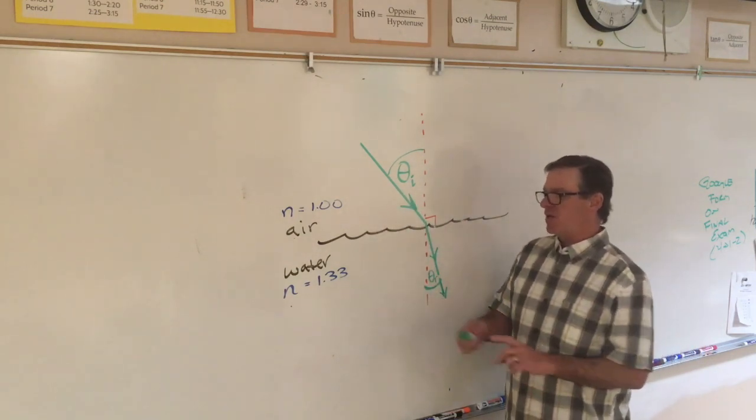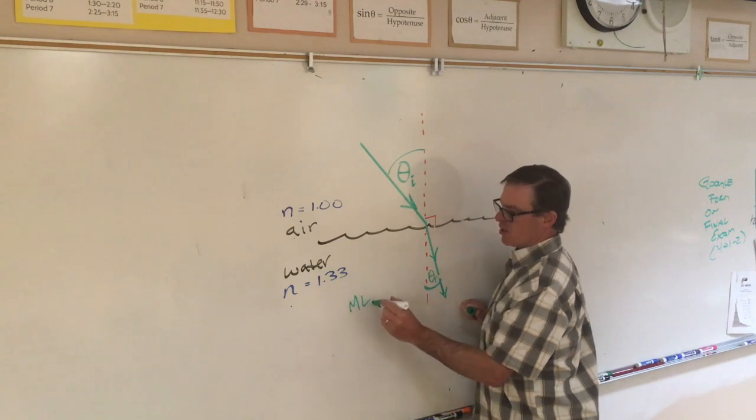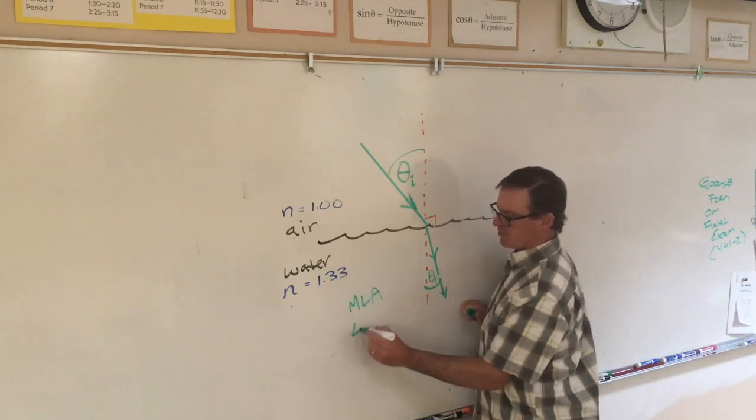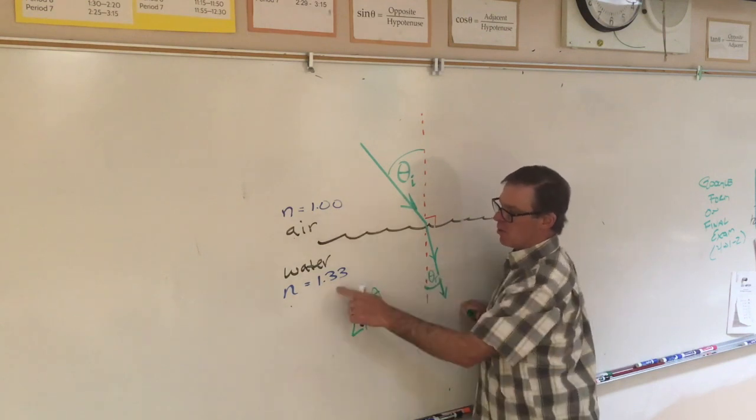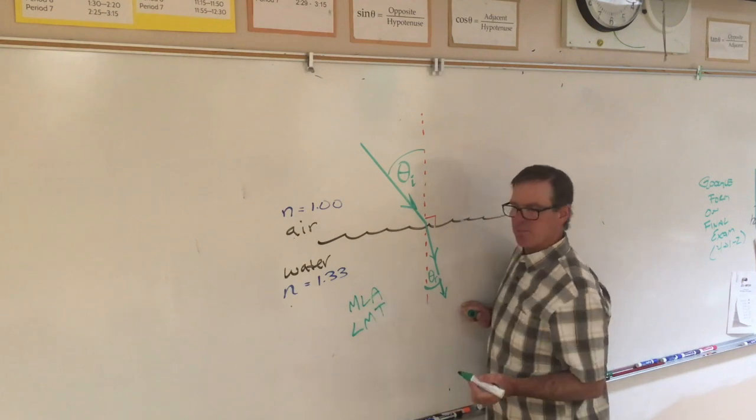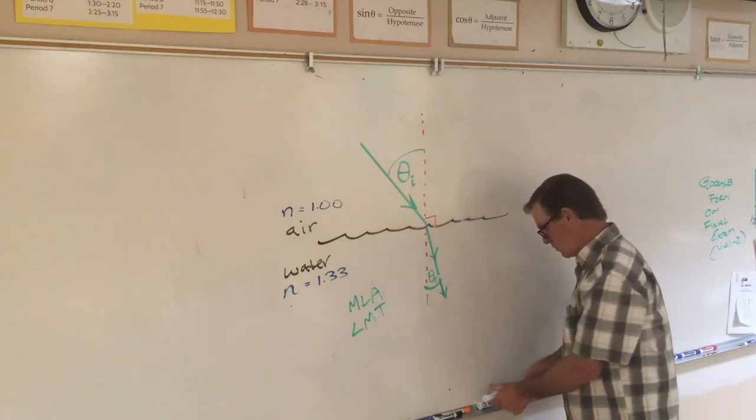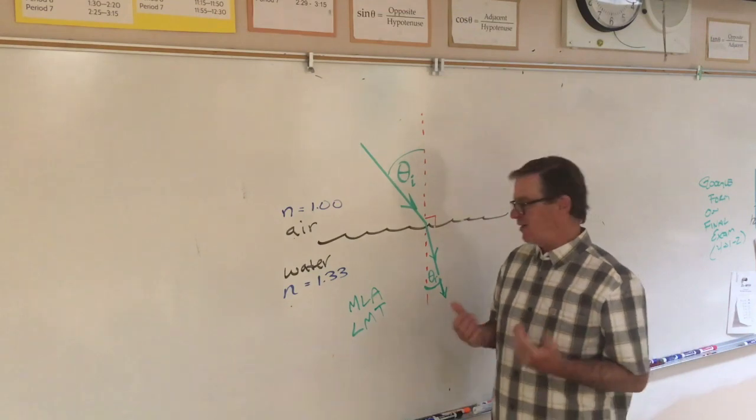So, if it goes from more to less, it's away from the normal. If it goes from less to more, it's toward the normal. Let's take a look at that in the lab.